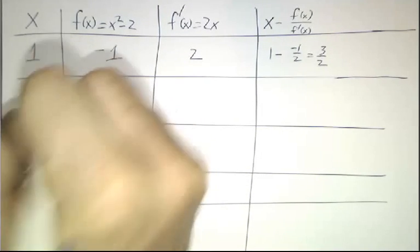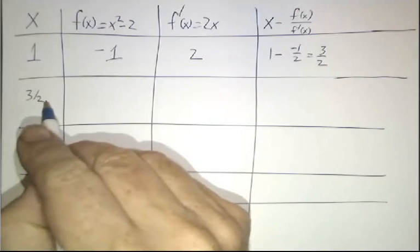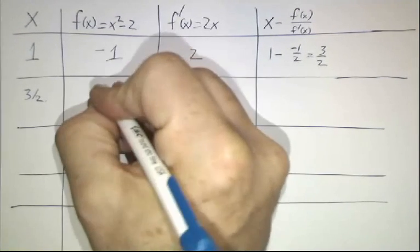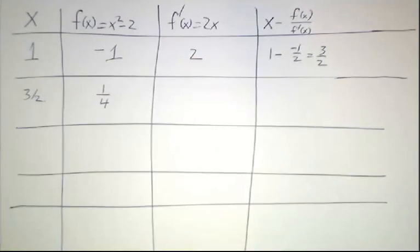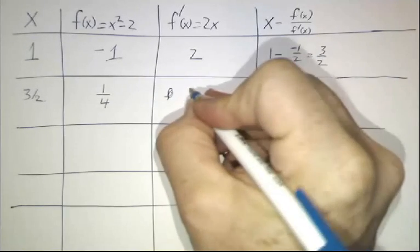We try 3 halves. And we say, f(x) 3 halves squared is 9 fourths minus 2 leaves 1 fourth. f prime is twice 3 halves. That's 3.